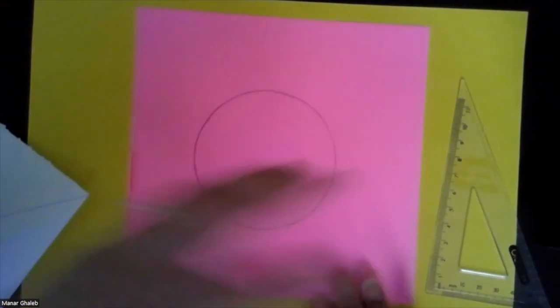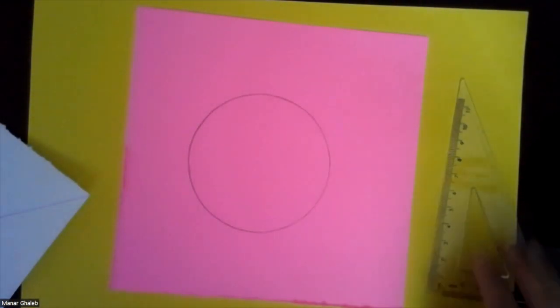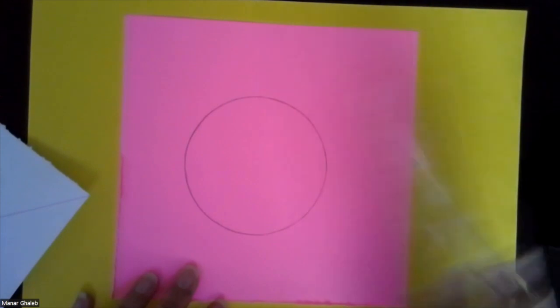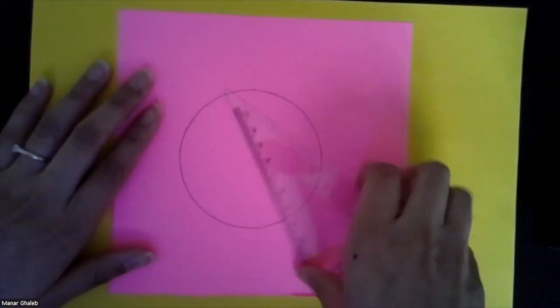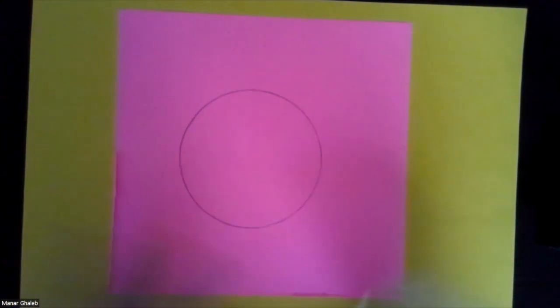Now, not all circles are foldable. So I'm going to show you a method that we can use using a set square. So the method goes as follows.